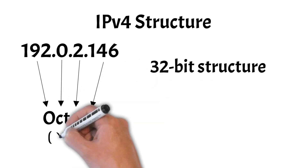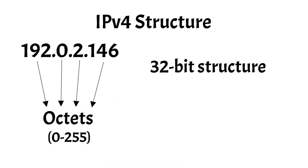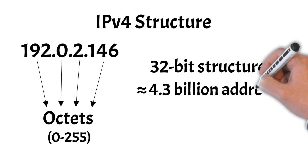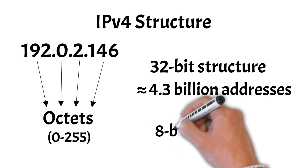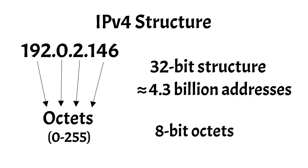Each octet can range from 0 to 255, making the entire IPv4 address space capable of holding around 4.3 billion unique addresses. These segments are called octets because they are comprised of 8 bits, which allows for 256 different combinations per segment.